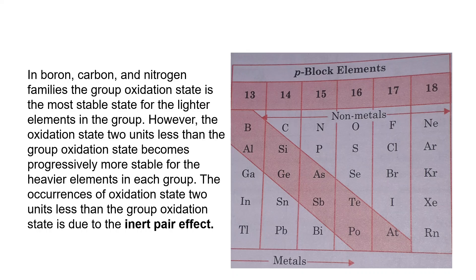In the boron, carbon, and nitrogen families, the group oxidation state is the most stable state for the lighter elements in the group. However, the oxidation state 2 units less than the group oxidation state becomes progressively more stable for the heavier elements in each group. The occurrence of this oxidation state 2 units less than the group oxidation state is due to the inert pair effect.